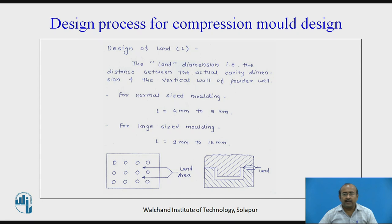Design of land. The land dimension is the distance between the actual cavity dimension and the vertical wall of the powder well. For normal size molding, L is equal to 4 mm to 9 mm. For large size molding, 9 mm to 16 mm. You can see the land area over here.